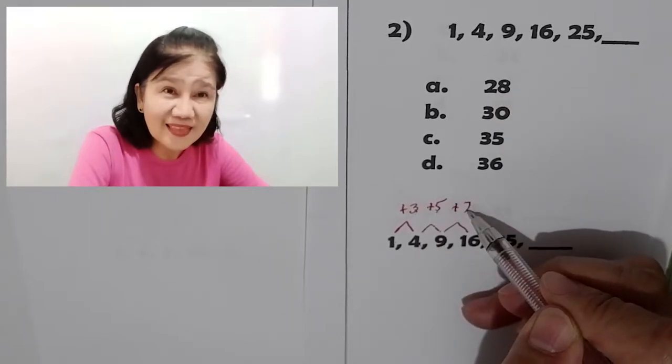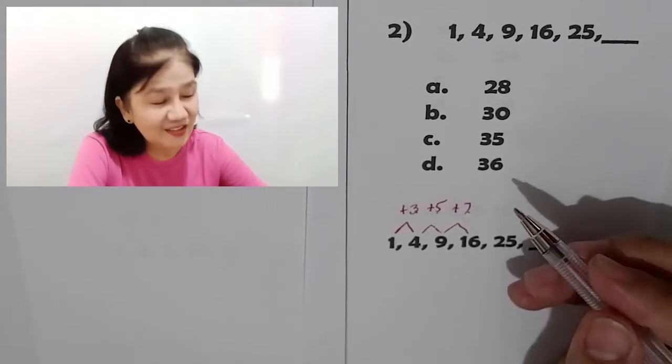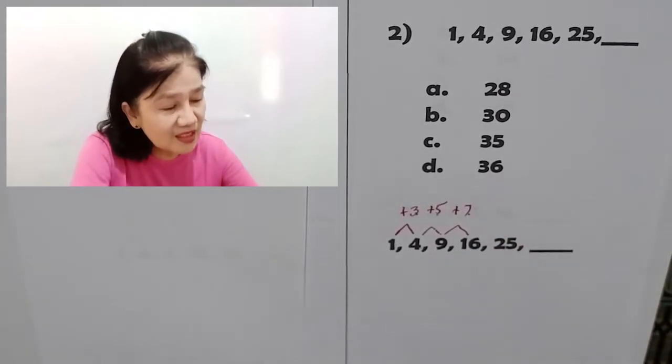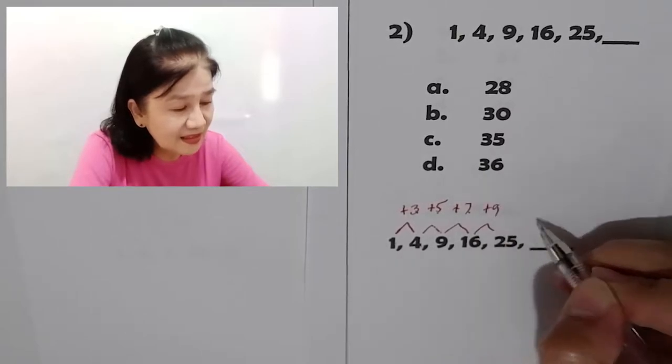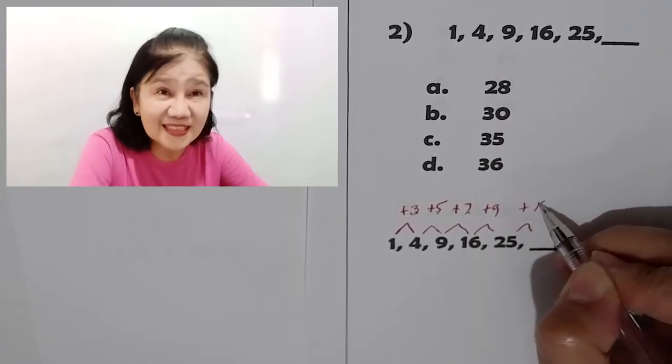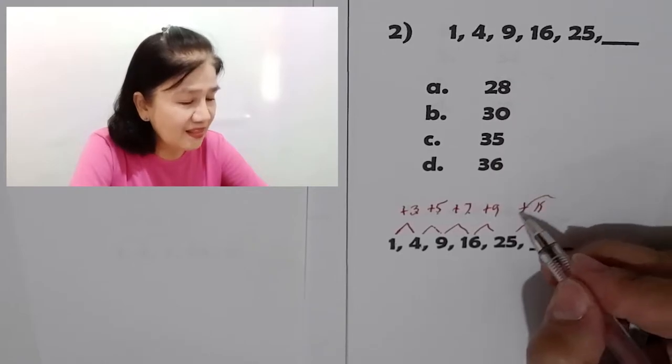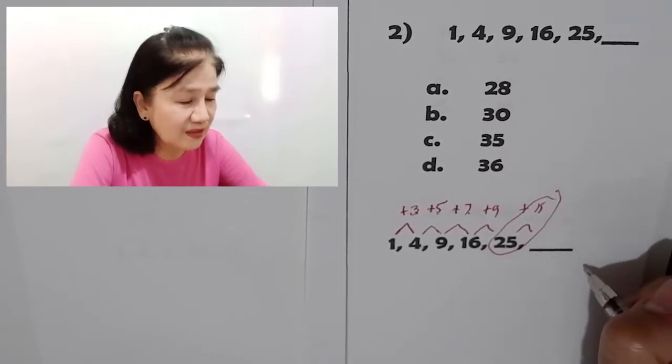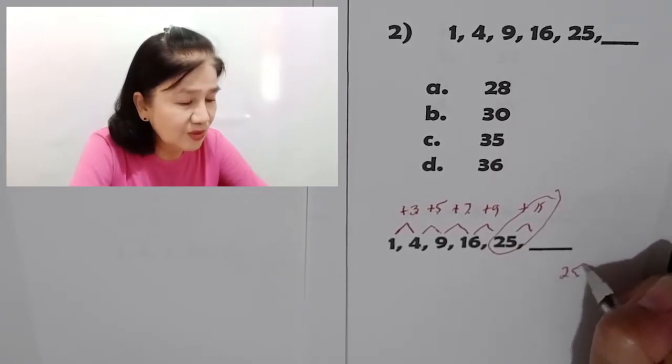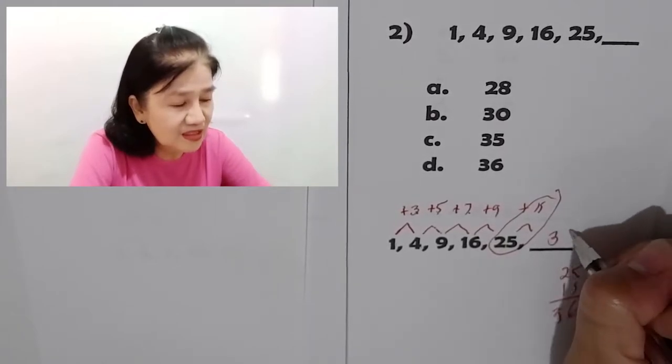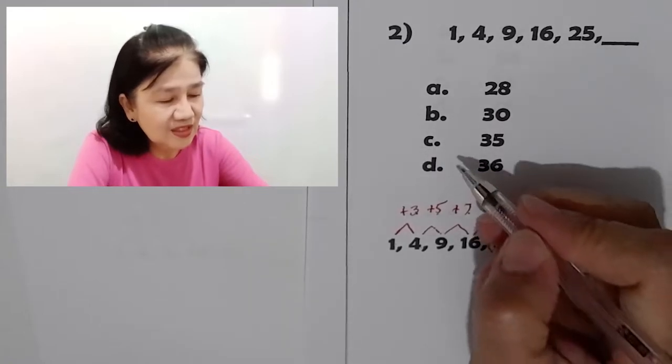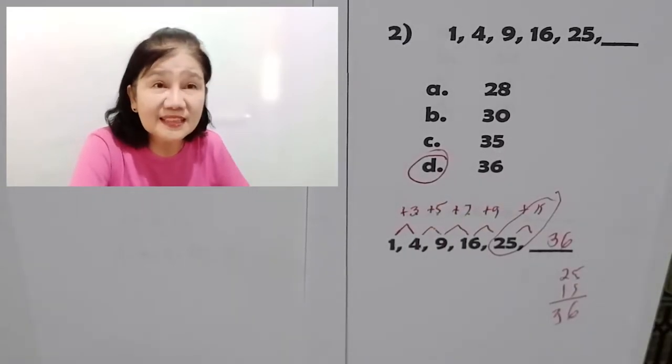What are these numbers? 3, 5, 7. Yes, these are the odd numbers. So, if you have 3, 5, and 7, the next one will be 9 and then 11. Isn't it? Then, add this to 25 plus 11. So, you get 25 and 11. 5 plus 1 is 6, 3. So, this is now 36. So, the answer is letter D.